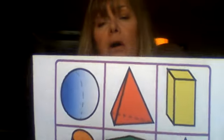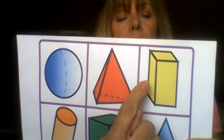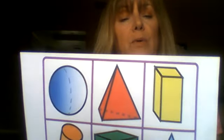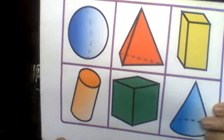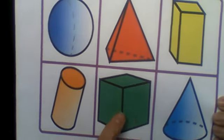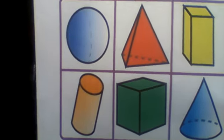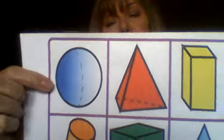We have a sphere. This is a pyramid. This is a rectangular prism. This is a cylinder. This is a cube. And my favorite, a cone. So let's look at each one of these in particular.